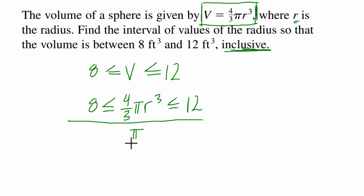And I'm also going to divide by 4 thirds to get rid of this whole front term. So when I divide by 4 thirds, that's really multiplying by the reciprocal of 4 thirds, which is 3 fourths. So 8 times 3 fourths is 24 over 4, which is 6 divided by pi,